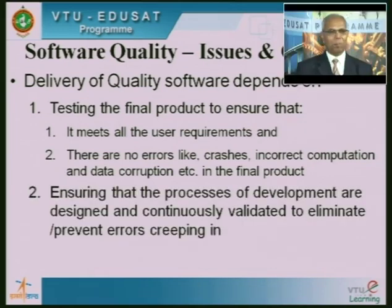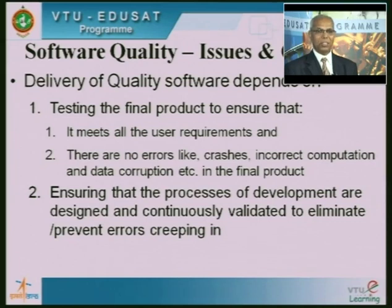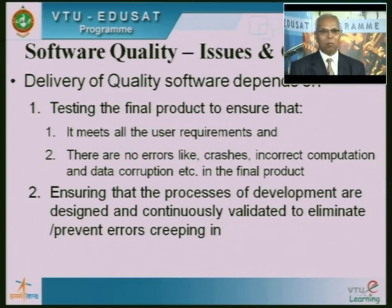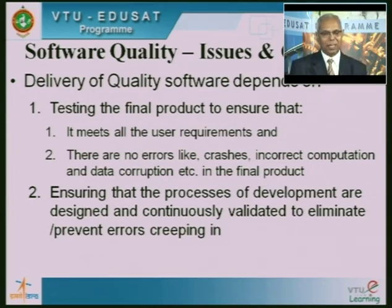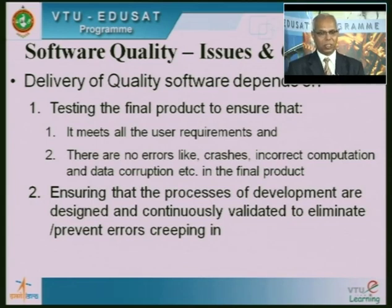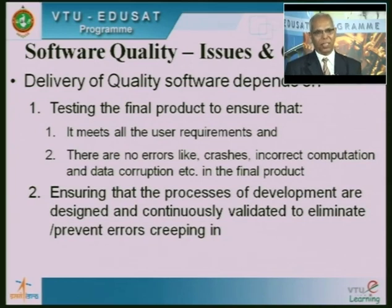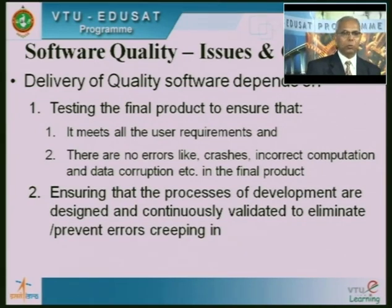Ensuring that the processes of development are designed and continuously validated to eliminate or prevent errors creeping in is also key. Quality product development involves using quality processes. If we have good processes, the output will be reasonably good. To maintain software quality, we look at the various stages of development — requirement definition, design, development, testing — and in each of these processes, we introduce certain components of validation and verification to make sure errors will not creep in.